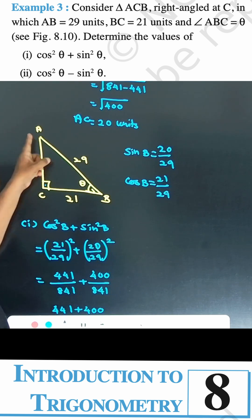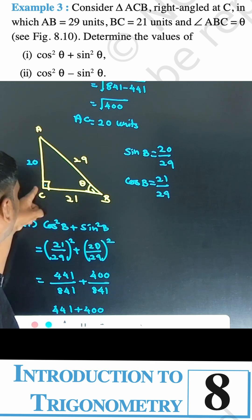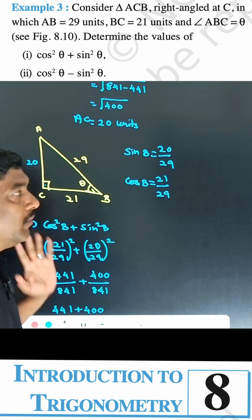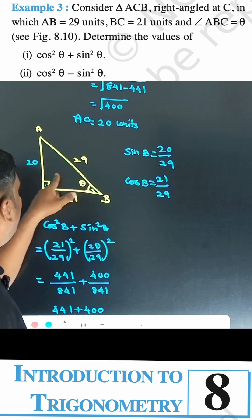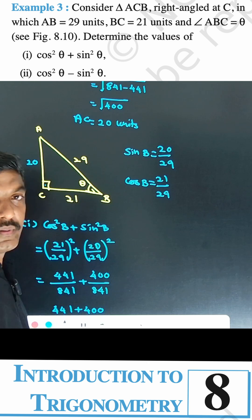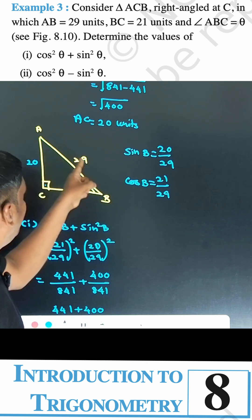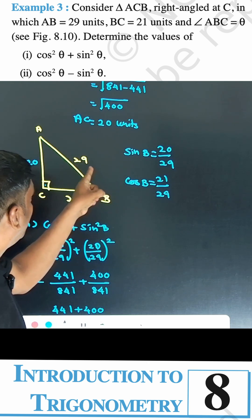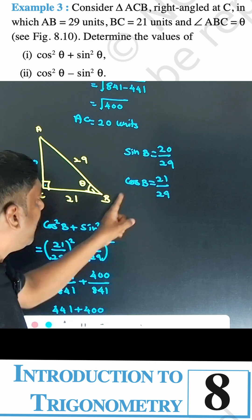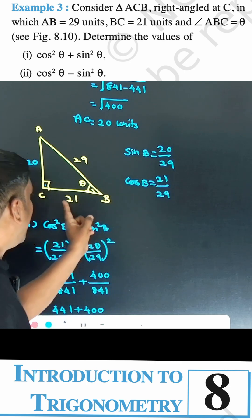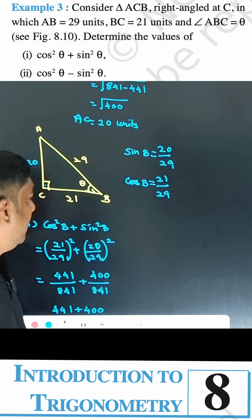Looking at the diagram: AB is 29, BC is 21, and AC is 20. Now we find sinB and cosB. SinB equals opposite divided by hypotenuse, which is 20 divided by 29. CosB equals adjacent divided by hypotenuse, which is 21 divided by 29.